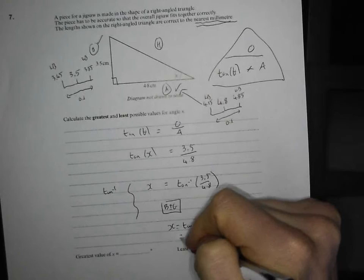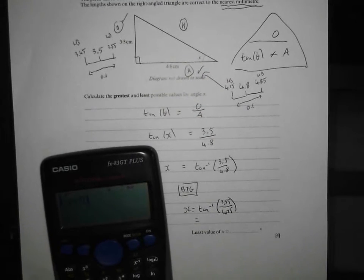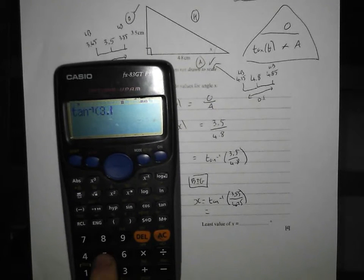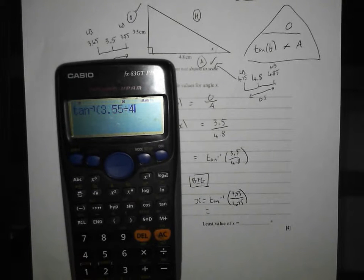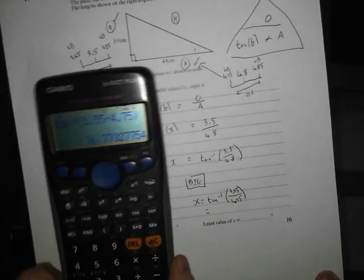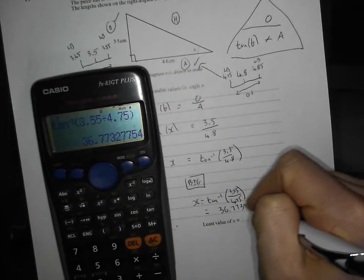So let's bang that into the calculator. I'm going to go for shift tan, that's tan to the minus one, and I'm going to go for 3.55, and I'm going to divide it by 4.75. Close my bracket, press equals, and I'm going to get 36.7732 dot dot dot degrees.